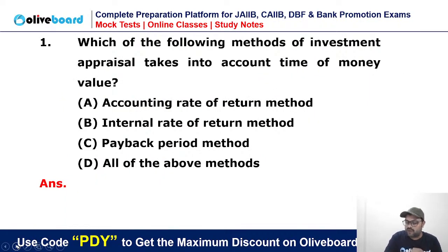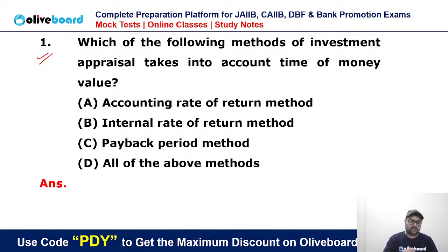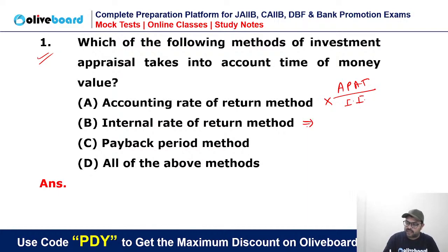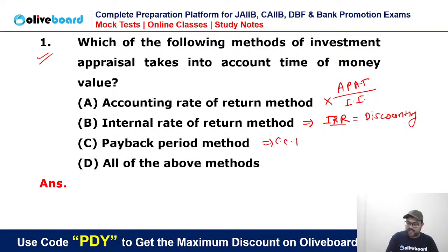Which of the following methods of investment appraisal takes into account the time value of money? Time value of money uses discounting or compounding. In ARR — Accounting Rate of Return — we take average PAT divided by initial investment. No time value of money is used here, so ARR is wrong. IRR — Internal Rate of Return — is correct because discounting is done in IRR. In payback method, only cumulative cash flows are calculated — no discounting. So B (IRR) is the correct answer.